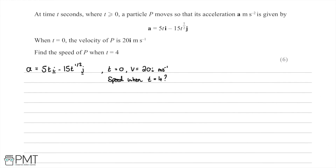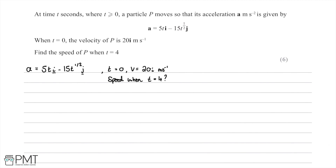In this question, at t seconds where t is positive, a particle p moves so that its acceleration vector a, measured in metres per second per second, is given by: a = 5t i + (-15t^(1/2)) j. We're also told that when t = 0, the velocity of the particle is 20i metres per second. We're asked to find the speed of particle p when t = 4.